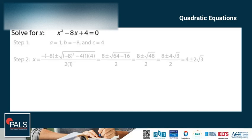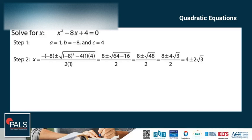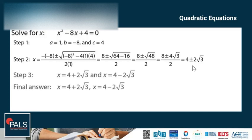Another example: solve for x: x squared minus 8x plus 4 is equal to 0. Step 1: a is 1, b is negative 8, and c is 4. Step 2: Plug in all values into the formula and simplify — after simplifying we have 4 plus or minus 2 times the square root of 3. Step 3: Use the plus and minus to show the two final answers: 4 plus 2 times the square root of 3, and 4 minus 2 times the square root of 3. Since we cannot simplify them further, the final answers are x equals 4 plus 2 root 3 and x equals 4 minus 2 root 3.